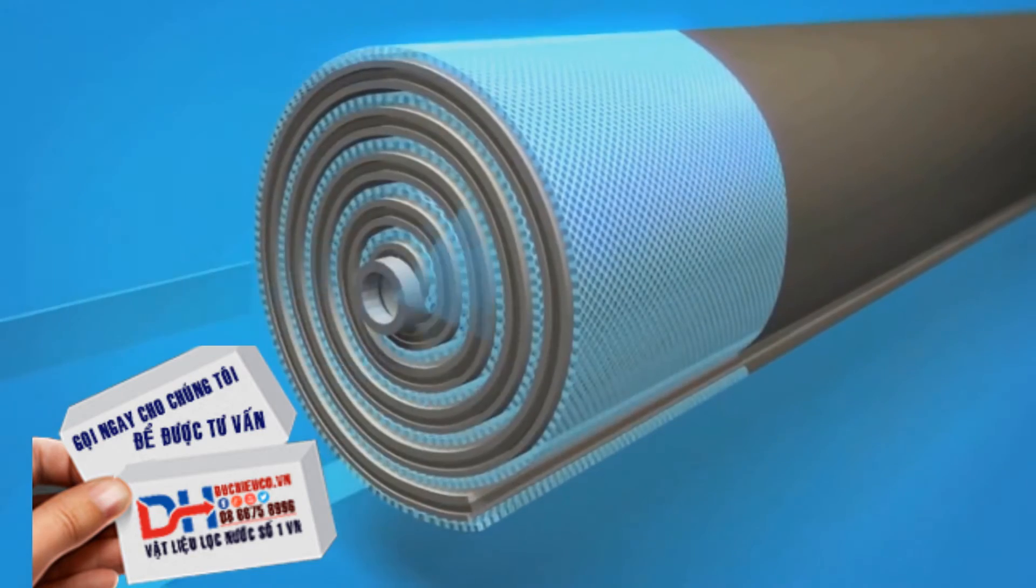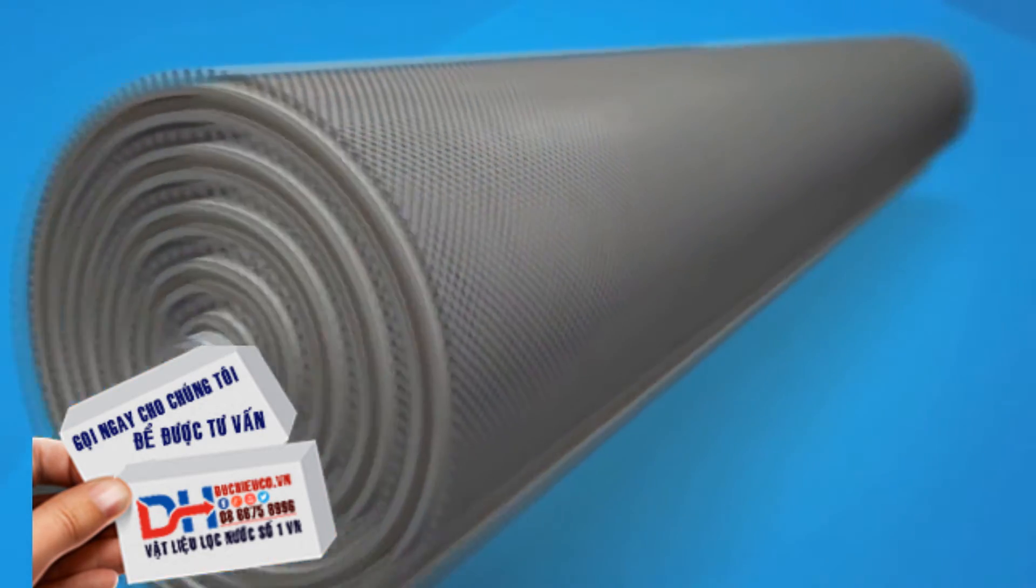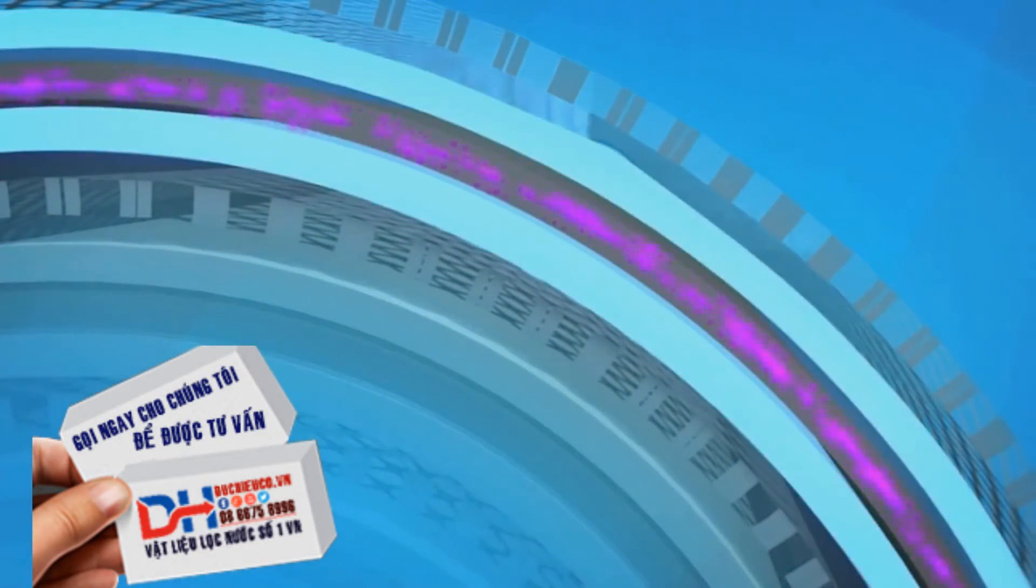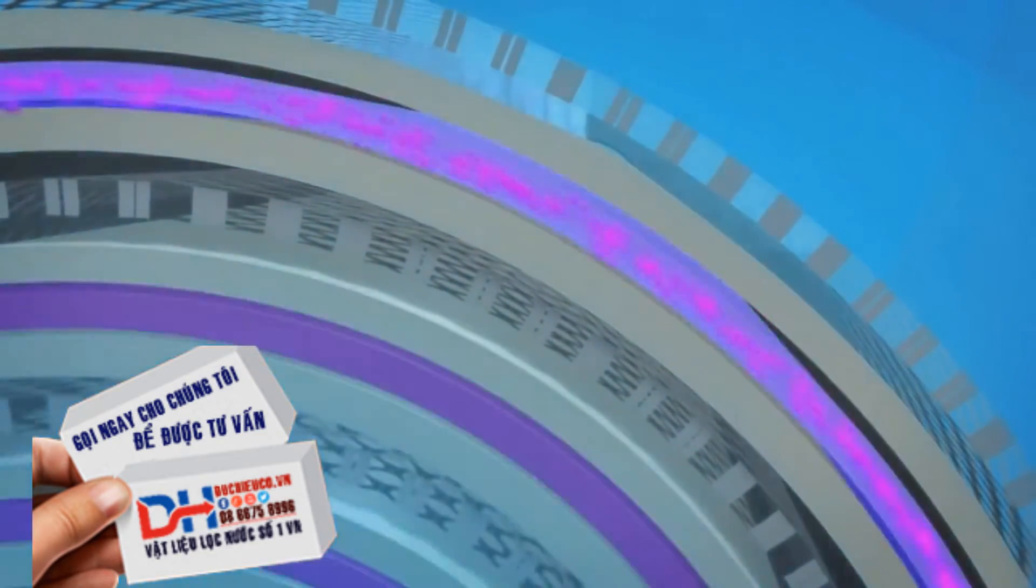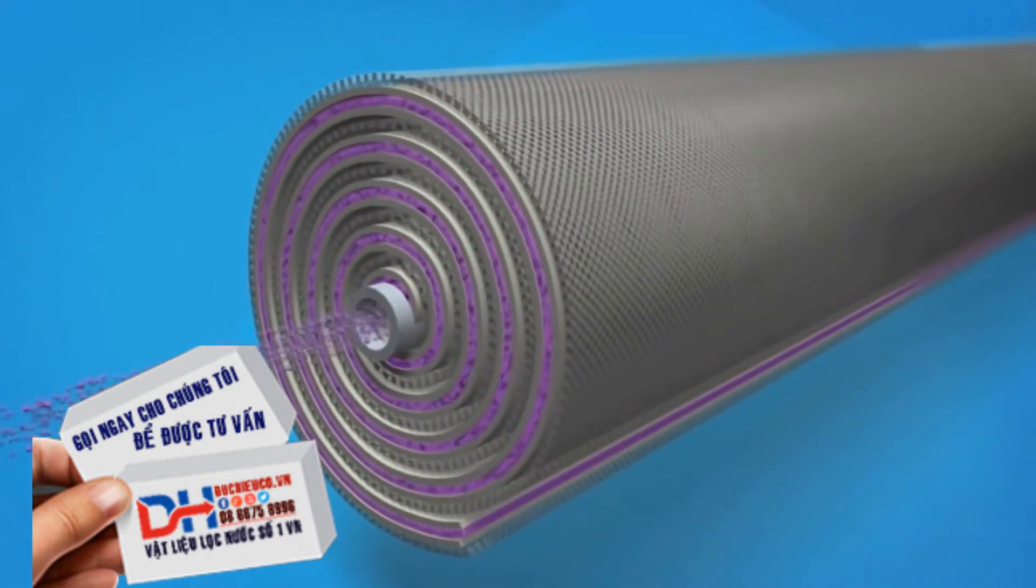Feed water is forced through the feed channel spacer and into the barrier layer of the membrane. Water passes through the membrane surface into the permeate channel. It flows in a spiral direction and collects in the core tube. This water is the final recycled water product, or permeate.